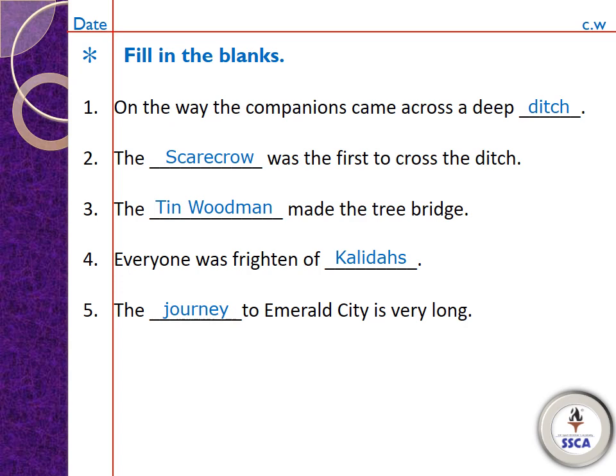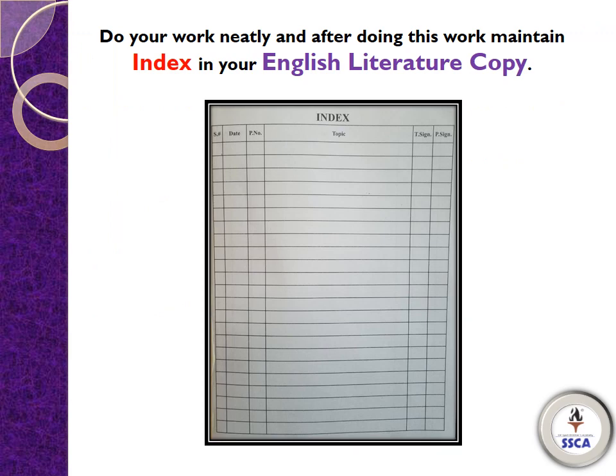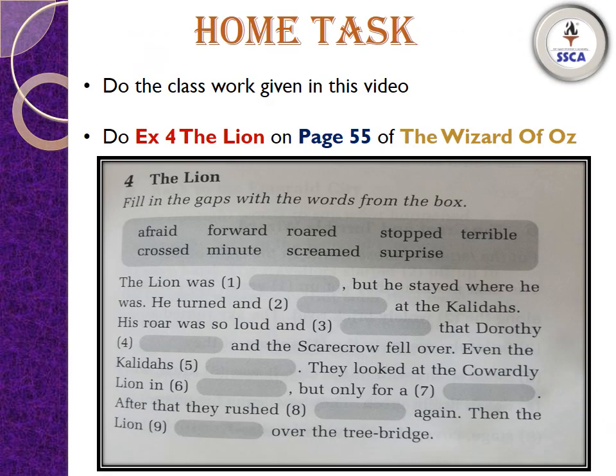Here our chapter 4 ends. After that you have to maintain the index in your English literature copy with proper serial number, date, page number, and topic. Now move towards your home task. Your home task is to complete the class work given in this video, and then do exercise 4 'The Lion' on page number 55 of The Wizard of Oz.